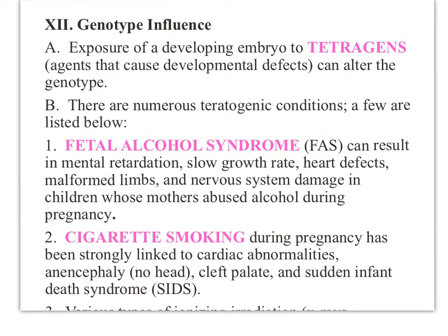One teratogenic condition is fetal alcohol syndrome, where an otherwise normal baby is exposed to high amounts of alcohol while the mother is pregnant. These children usually have a lot of problems: some degree of intellectual disability, a much slower growth rate, and won't meet growth milestones even after birth. They might have heart defects, trouble breathing, and may require a ventilator. They're usually NICU babies — in the neonatal intensive care unit after birth. They might also have arms and legs that aren't formed correctly, or even nervous system damage.